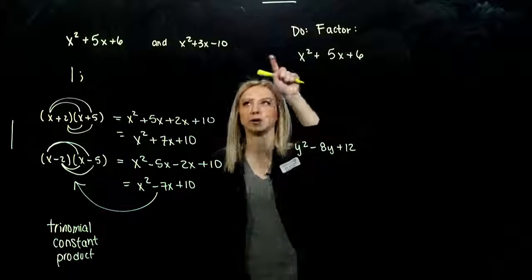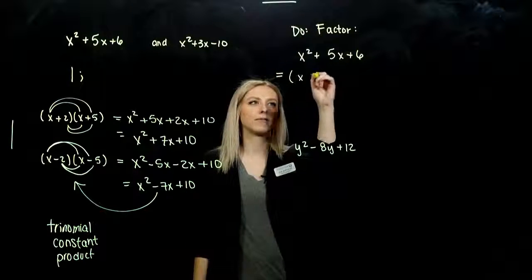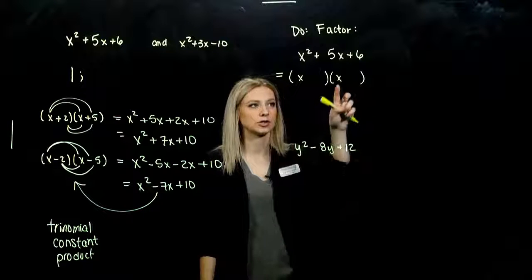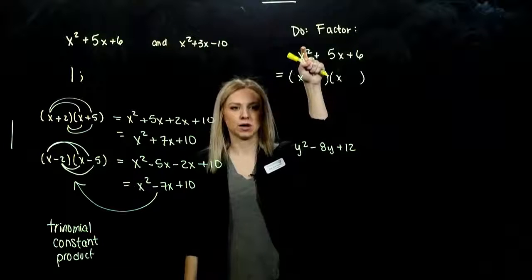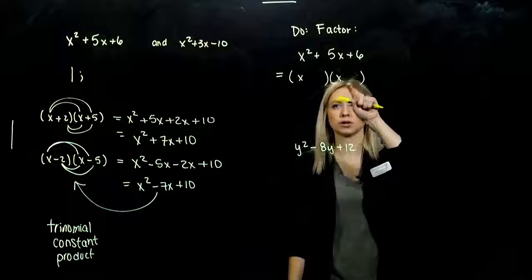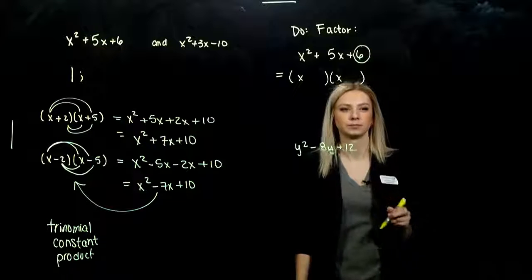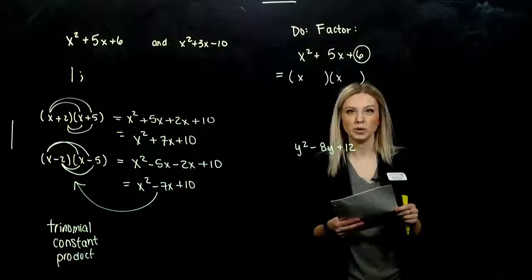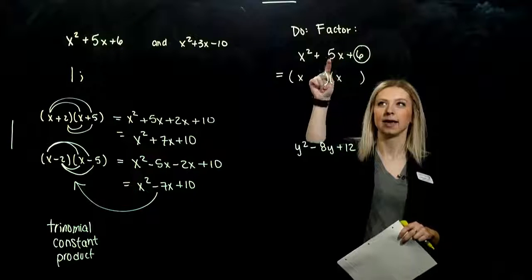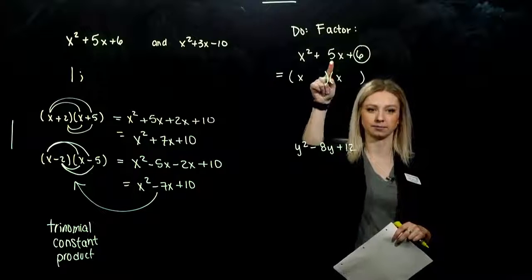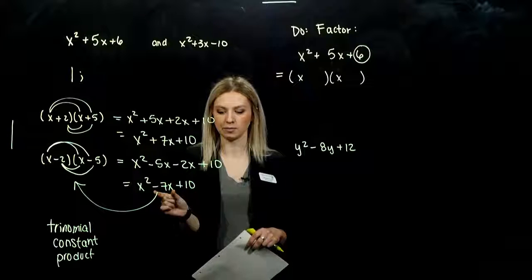So, factoring this trinomial in our nice form: I have a 1 out on the front, so automatically I know I'm going to have an x and an x for the first terms in my binomial product. Because when I FOIL, first I get x squared. Now we need to work towards what constants we need. We always look at the end value, and we need to break up 6 into factors that are going to multiply to 6 and add to 5.